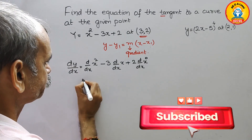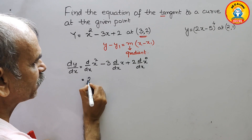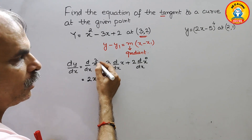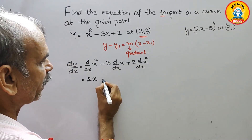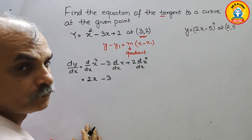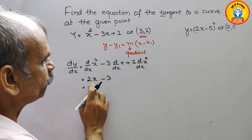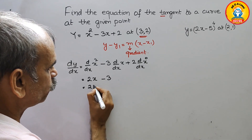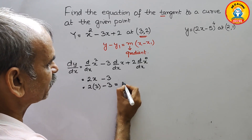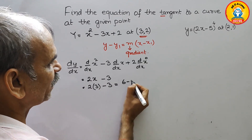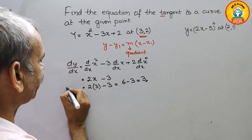Now differentiate. If you differentiate x squared, you will get 2x with the help of the power function. Here we will get minus 3. So now substitute the x value — which is 3 — here. We get 2 times 3 minus 3, that is 6 minus 3, which equals 3.